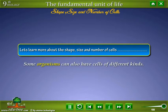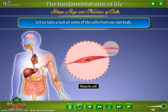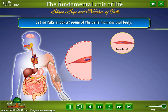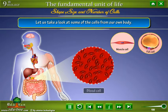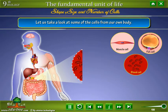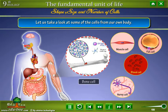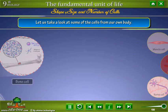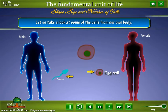Some organisms can also have cells of different kinds. Let us take a look at some of the cells from our own body. This is called a smooth muscle cell. This is a fat cell. These are blood cells. This is a nerve cell. These are bone cells. And these two are cells for reproduction: sperm, found in males, and ovum, found in females.